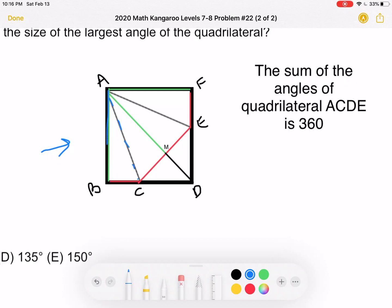So, because triangle ABC and triangle AMC are congruent, we know that their angles, their corresponding angles, are also congruent. So, angle CAB must be equal to angle CAM.